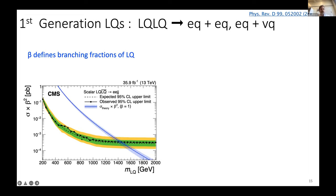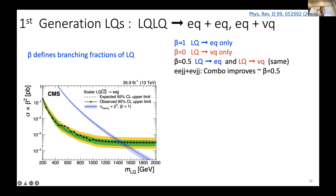We then produce limit plots: as a function of leptoquark mass, we set a cross-section upper limit multiplied by a branching ratio, assumed to be one. We see no significant excesses, and one particular theory can be excluded up to a certain mass when the branching ratio is one. We can also vary the branching ratio between zero and one, determining how the leptoquark decays into either electron plus quark or neutrino plus quark.